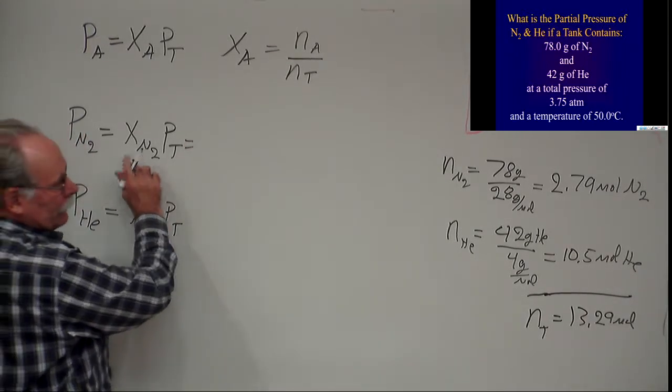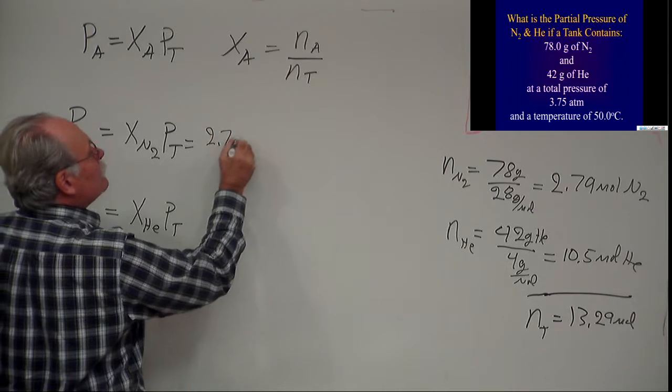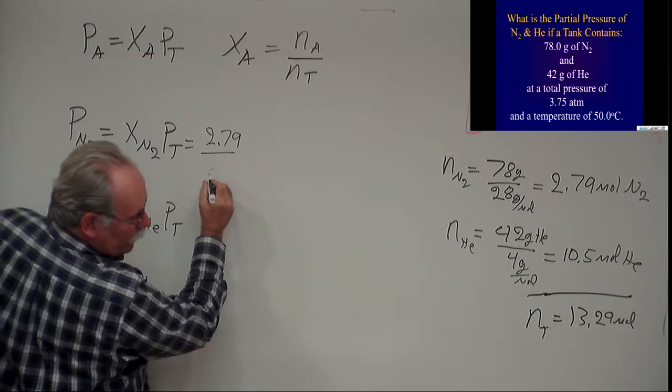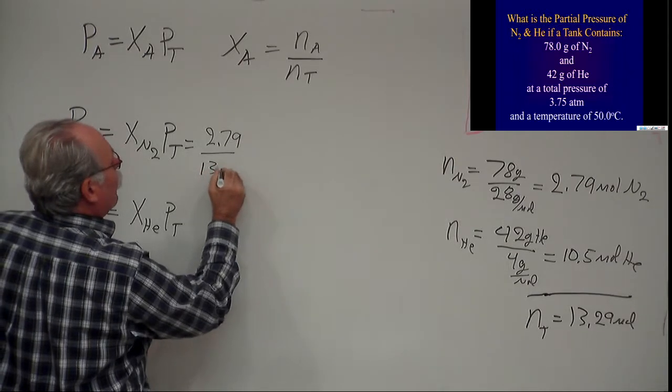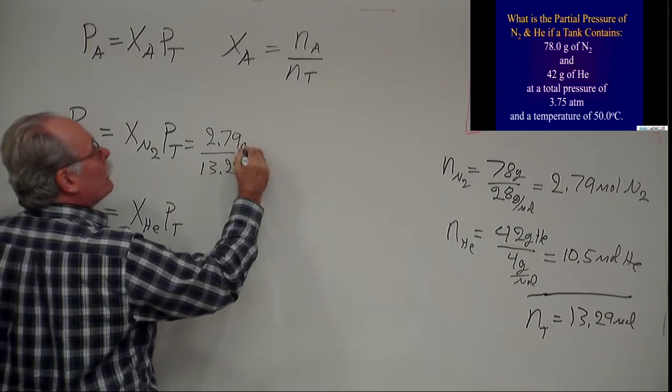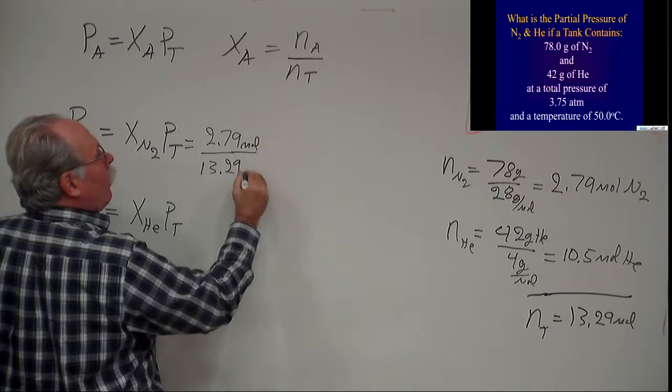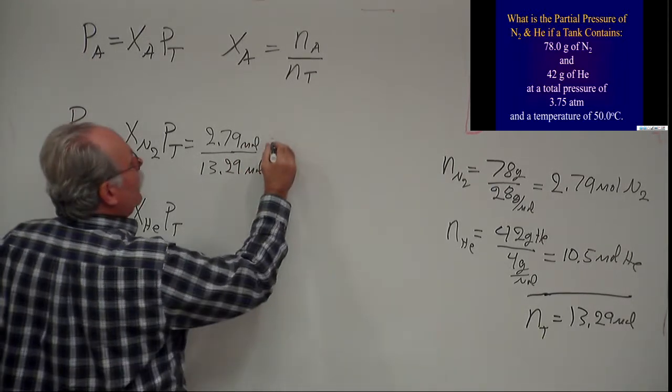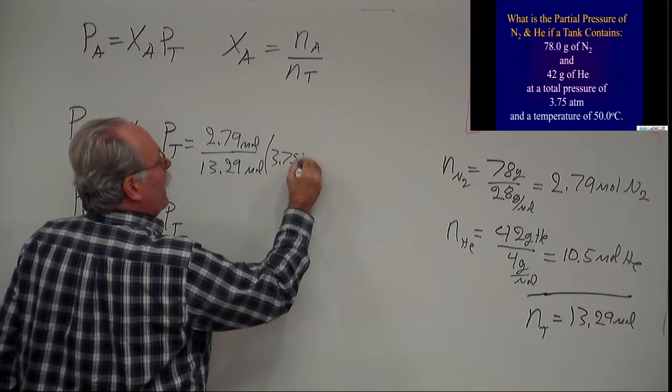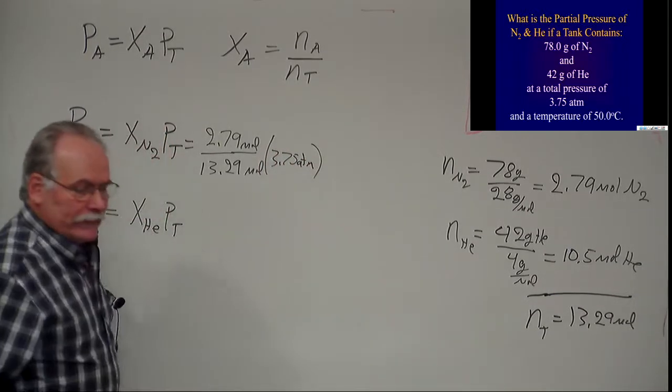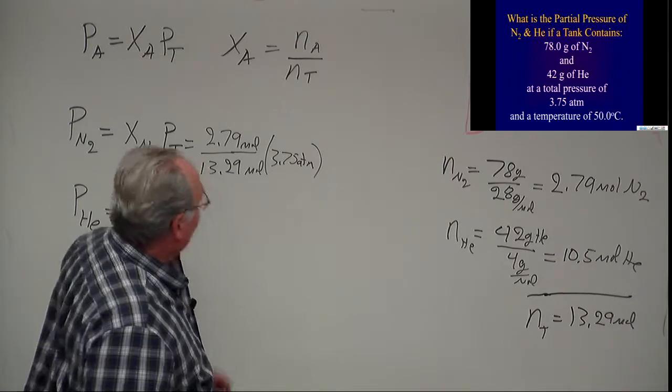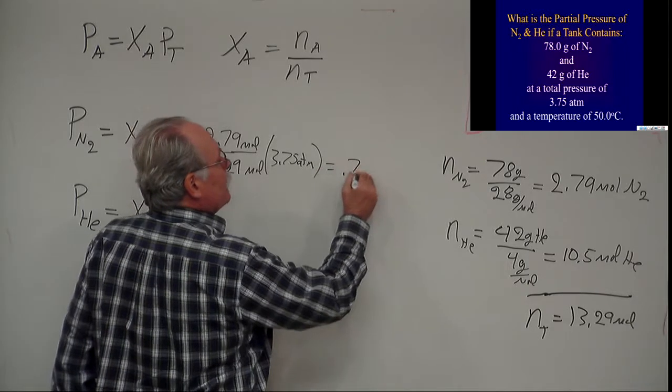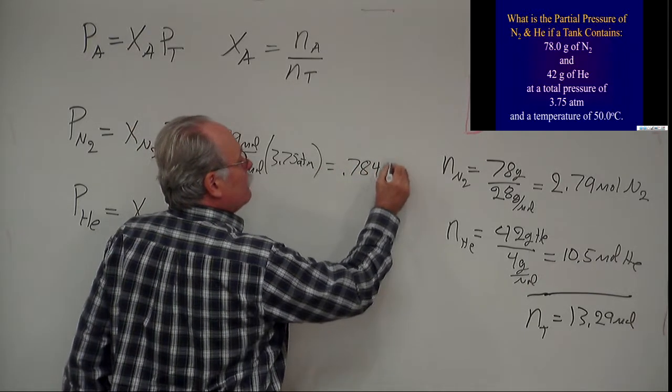So the mole fraction of nitrogen is 2.79 over 13.29, the moles of nitrogen over the moles total. Then I multiply that by 3.75 atmospheres, the total pressure, and that gives me 0.784 atmospheres.